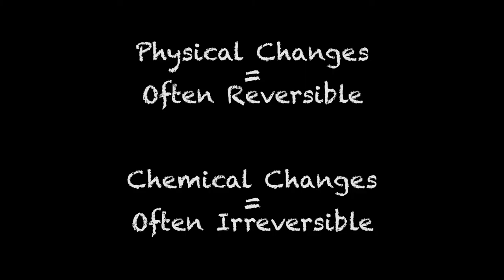Alright students, now you should be able to distinguish a physical and a chemical change. Remember, physical changes are often reversible and chemical changes often are not. So think to yourself: can I go backwards? Can I undo that? If not, it's probably a chemical change. Make sure to review your notes and complete the questions in the IP.